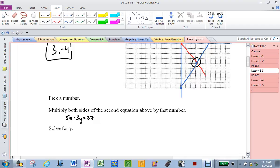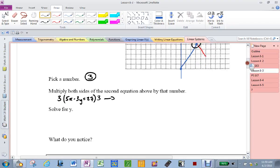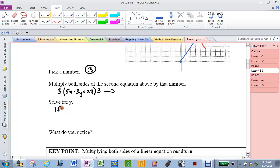By now, everyone should have done this. I am going to pick the number 3. So watch what happens. I'm going to multiply everything by 3, both sides. So what do I get? 15x minus 9y equals 81. That was the first step. I multiply both sides. Now I have to solve for y. What does that mean? Get y by itself.